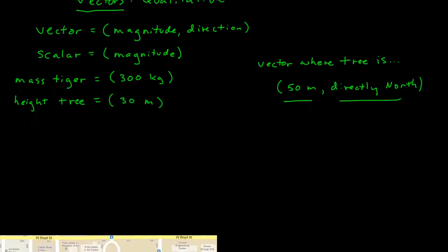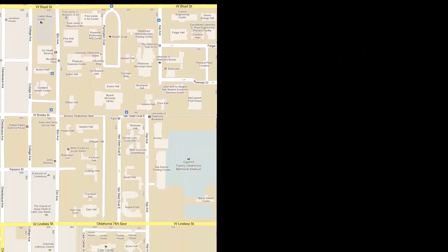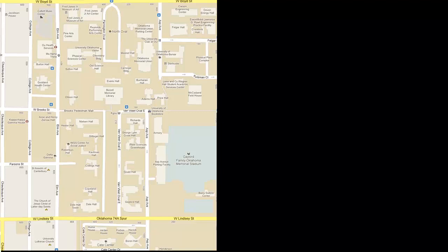Here's an example of where we needed a vector for a complete description of the quantity. I want to look at that a little more closely with a couple other examples. Here I have a map of part of the OU campus. Let's say I want to go from Nielsen Hall to the parking garage. I might find that this distance is 300 meters, but that 300 meters does not give me enough information. Nielsen Hall is also 300 meters away from the Union.